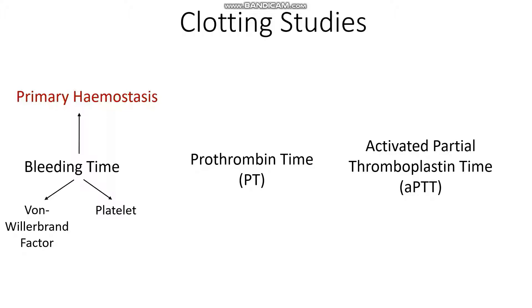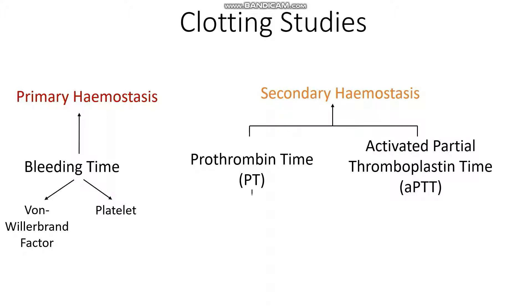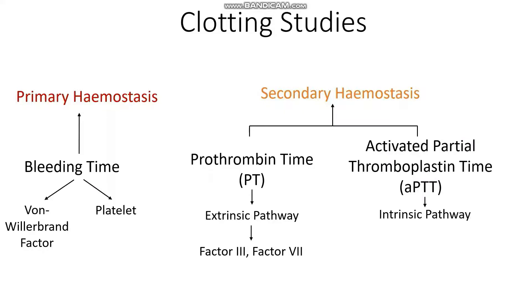Prothrombin time and activated partial thromboplastin time measure the activity of secondary haemostasis. Prothrombin time, or PT, measures the activity of the extrinsic pathway — thus the activity of factors 3 and 7. So if you have a raised PT, it's because we have a defect in the extrinsic pathway. The APTT measures the activity of the intrinsic pathway, and thus measures the activity of factors 8, 9, 11, and 12.